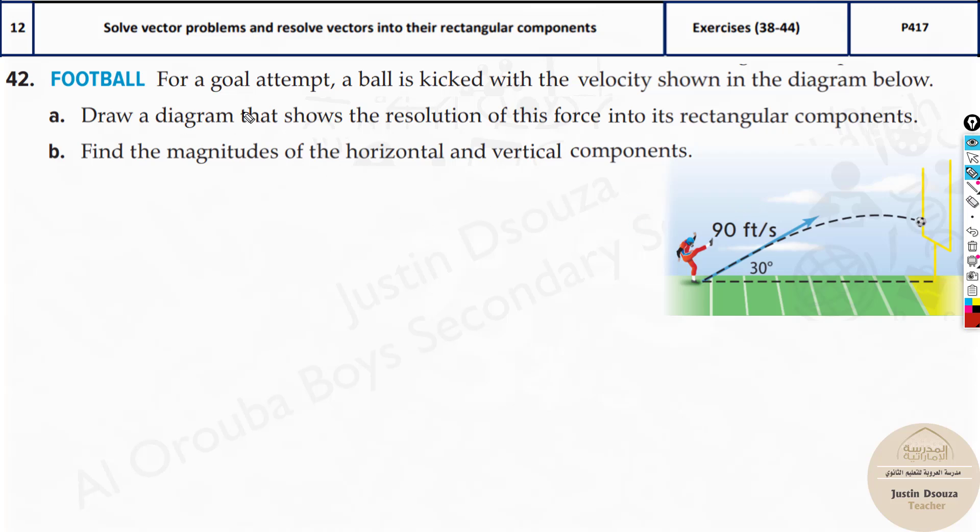Here we have a real life situation. For a goal attempt, a ball is kicked with the velocity shown in the diagram. Draw a diagram that shows the resolution of this force into its rectangular components. Now rectangular means vertical and horizontal component. Let us write the magnitude over here. This is 90 feet per second. And then we have an angle of 30 degrees. This would be the horizontal x, the vertical y.